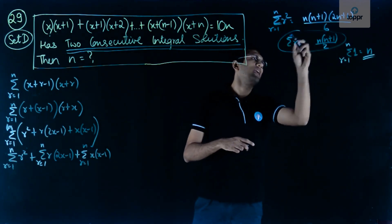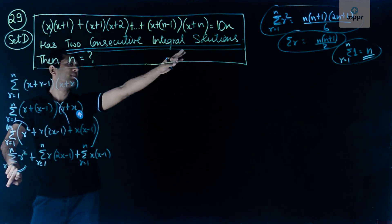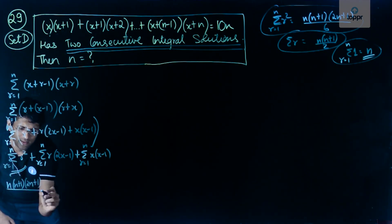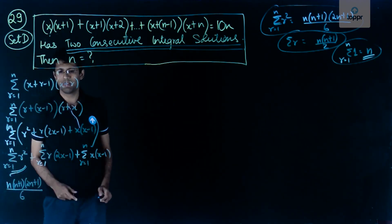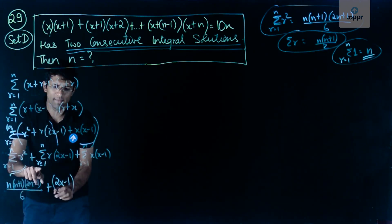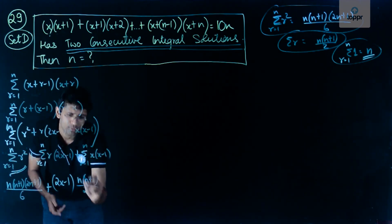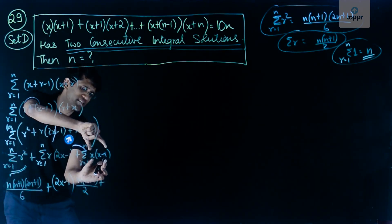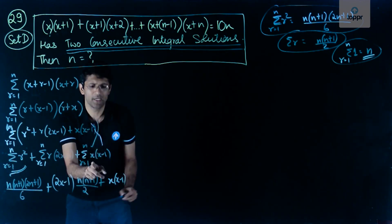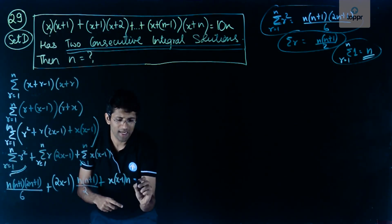Using these three formulas, the first summation is replaced by n(n+1)(2n+1)/6. Taking (2x-1) out of the second summation, we apply n(n+1)/2. For the third term, there is no r inside, so x(x-1) comes out and multiplies by summation of 1 which is n. Equating this entire left hand side to 10n, and since n is common, we cancel n from both sides.